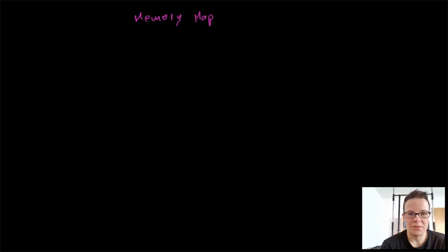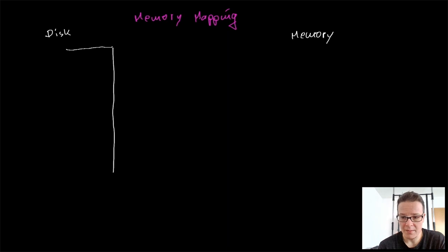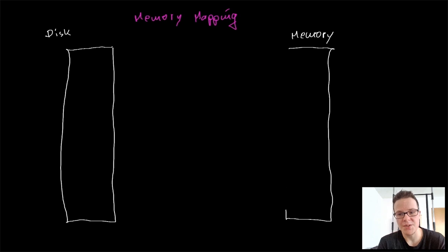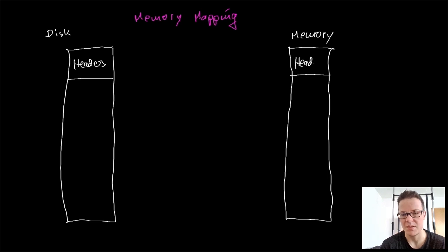So today we will be talking about memory mapping of portable executable files. So what is memory mapping actually? Mapping is in this context part of the loading process of a portable executable file, and it means that certain ranges of physical addresses are translated to ranges of virtual addresses. So physical addresses are the ones that are on disk, and the virtual addresses are the ones that you see in memory when the file is loaded there.